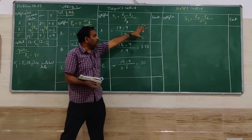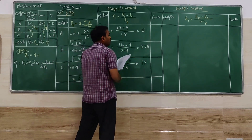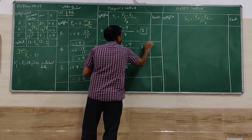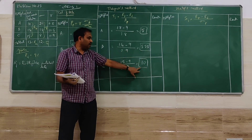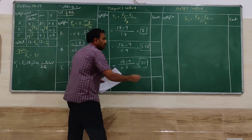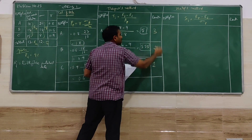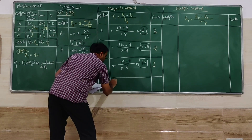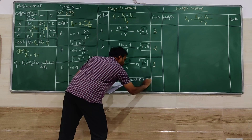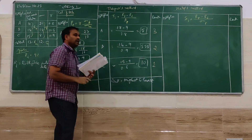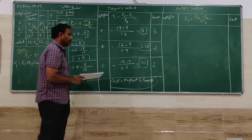Under Treynor's method, portfolios are ranked from highest to lowest value. The values are 5 for A, 5.55 for B, and 10 for C. Therefore, C is ranked 1st, B is ranked 2nd, and A is ranked 3rd. Ranking from highest to lowest is very important and must not be forgotten.